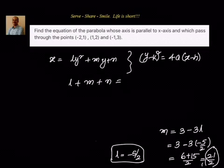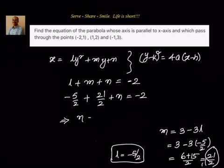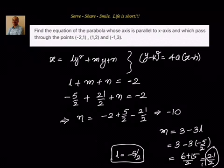Now we find n using the first original equation: l plus m plus n equal to minus 2. Substituting l equal to minus 5 by 2 and m equal to 21 by 2: minus 5 by 2 plus 21 by 2 plus n equal to minus 2. Simplifying, n equal to minus 2 plus 5 by 2 minus 21 by 2, which gives n equal to minus 10.